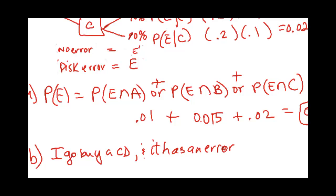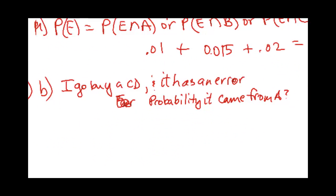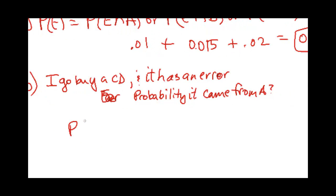What is the probability that it came from company A? So the way you would word that using conditional probabilities is probability of A given E, because the condition was that it had an error.